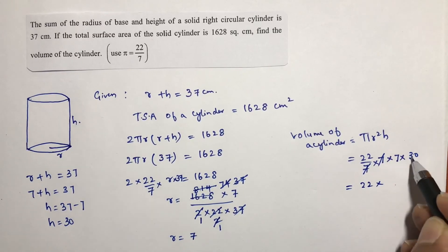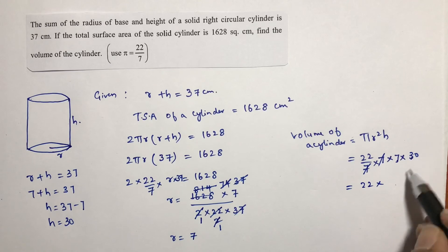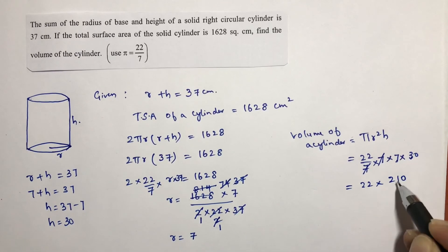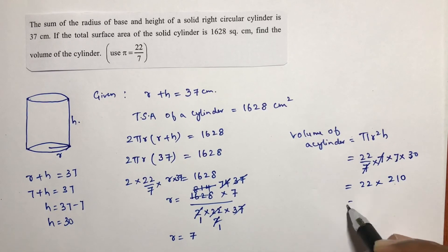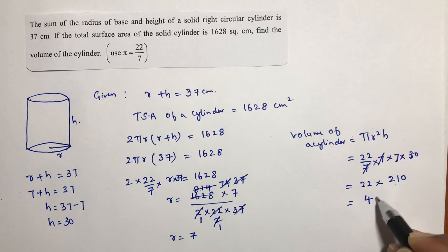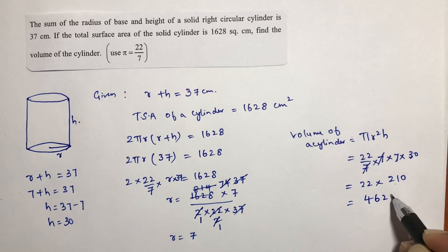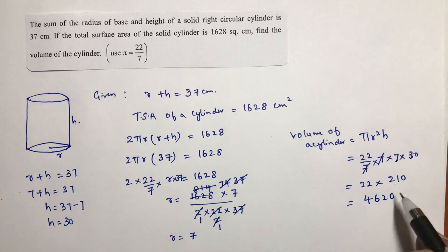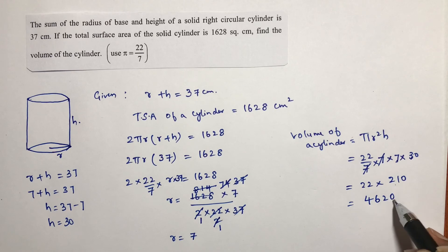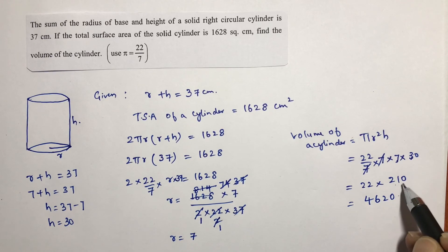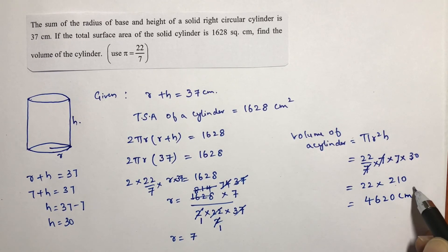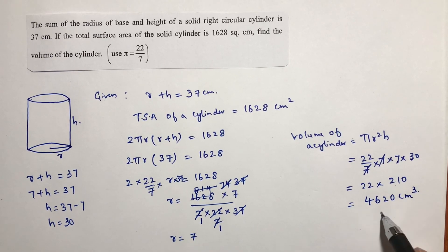Height is 37 minus 7, which is 30. Substituting: 22/7 times 7 squared times 30 equals 22 times 7 times 30 equals 4620 centimeter cube. So this is the volume of the cylinder.